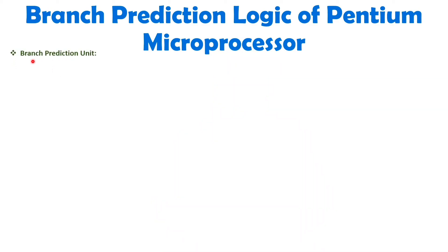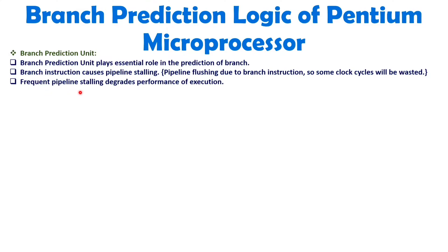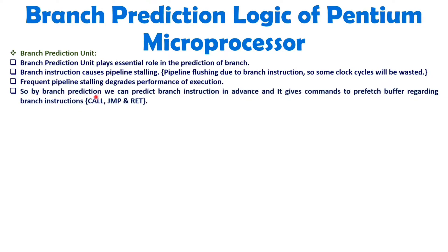When we talk about the branch prediction unit of the Pentium microprocessor, it plays an essential role in prediction of branch instructions. Branch instructions cause pipeline stalling, requiring the pipeline to be flushed, and because of that some clock cycles get wasted. Frequent pipeline stalling leads to degraded performance in program execution. Our goal is to predict the branch instruction in advance and give a command to the prefetch buffer. Branch instructions can be call, jump, or return type instructions in the Pentium microprocessor, and we predict these in advance.